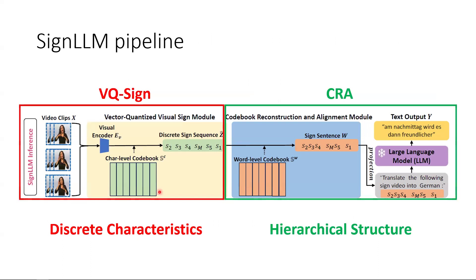We present our SignedLLM framework, which includes two key designs to impart discrete characteristics and hierarchical structures to the produced signed tokens. One is the vector quantized visual sign module — VQ-Sign — on the left, and secondly the codebook reconstruction and alignment module — CRA module — on the right. The VQ-Sign module imparts discrete characteristics, producing discretized signed tokens which we call character-level tokens. The CRA module takes these character-level tokens and imparts a hierarchical structure, combining them to produce word-level tokens. These word-level tokens are combined into a signed sentence that is passed into the off-the-shelf LLM together with a text instruction to be translated into the desired language.